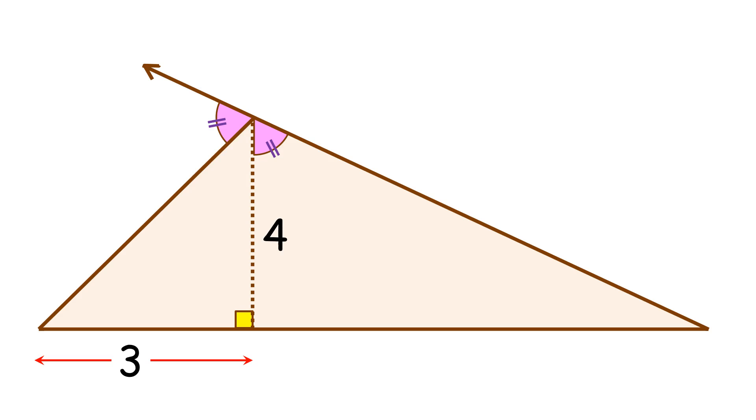Welcome everyone. In today's question, it is given that the height of the triangle is 4 centimeters, the partial length of the base is 3 centimeters, and these two angles are equal in measure.